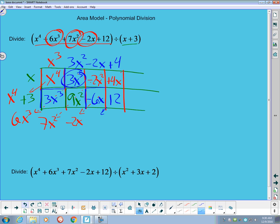But that was supposed to add up to 12. And it does. And so this is our answer to the division problem. So this is equal to x cubed plus 3x squared minus 2x plus 4.